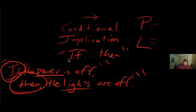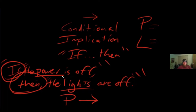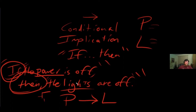How do we represent this as a conditional? Whatever follows the phrase 'if' goes on the left side of the arrow, and whatever follows 'then' goes on the right side. So P follows 'if', going to the left side of the arrow, and L follows 'then', going to the right side. This formula, P arrow L, stands for the English statement: 'If the power is off, then the lights are off.'